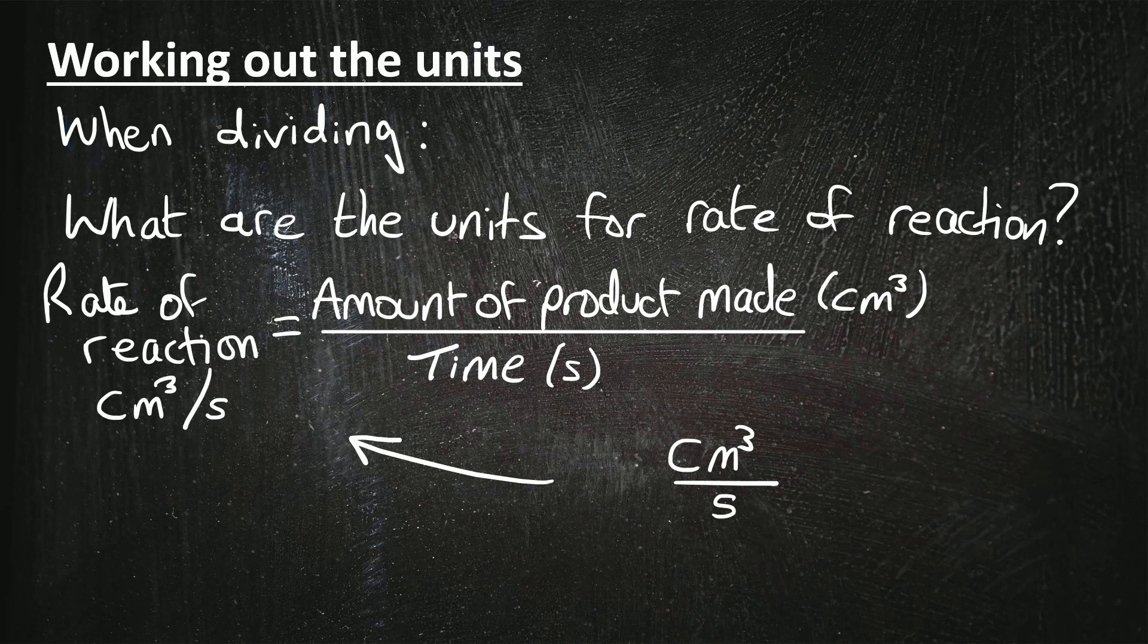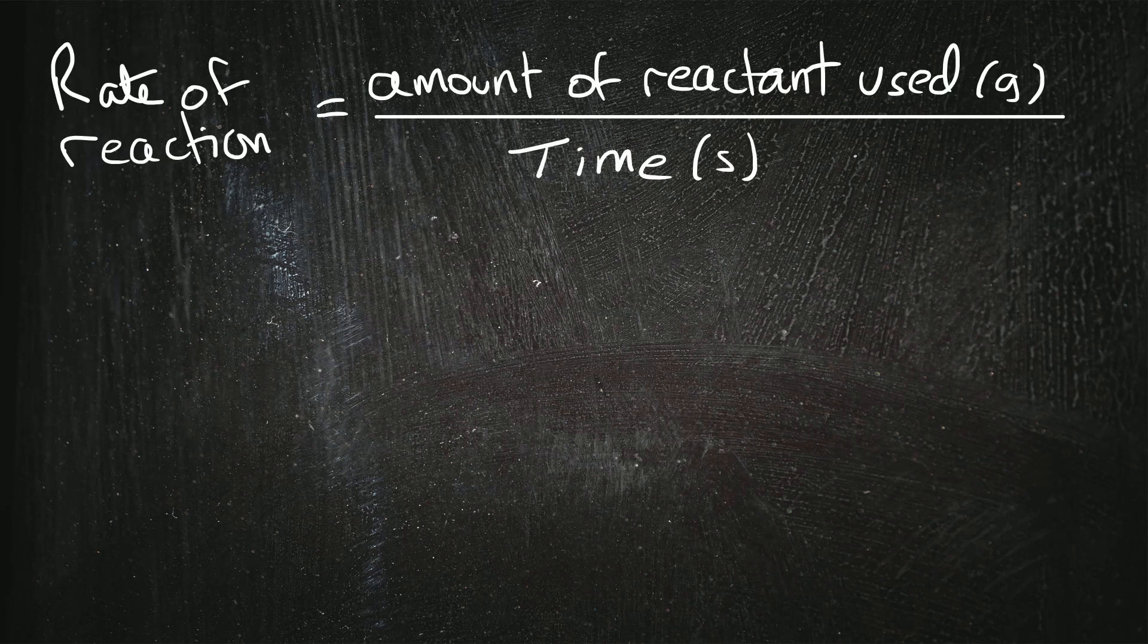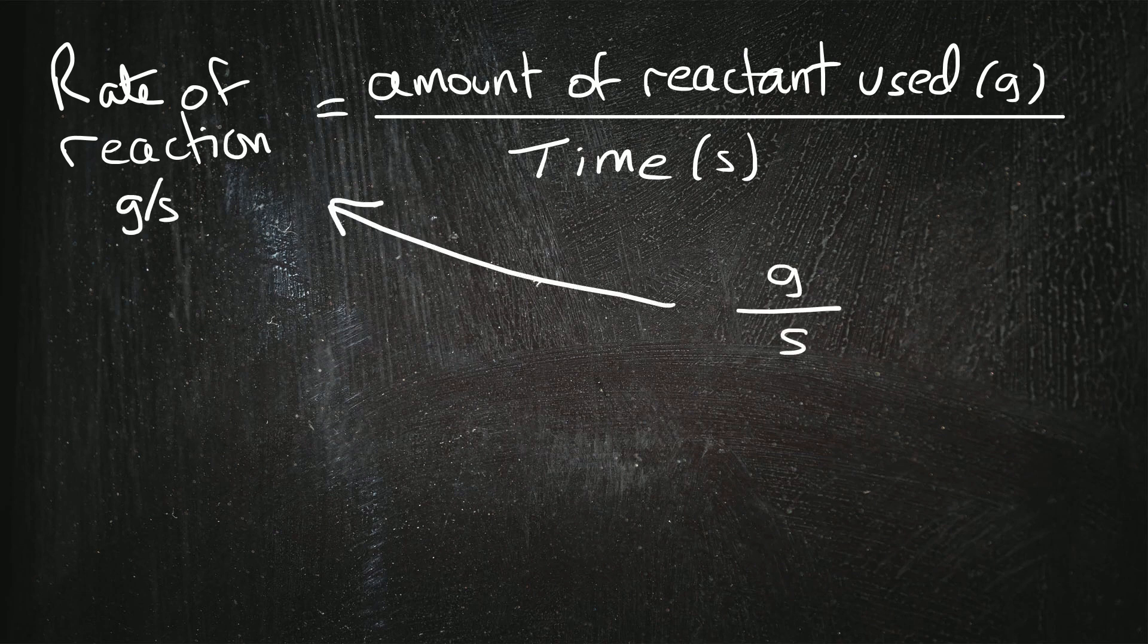Let's look at one more example which involves dividing numbers. So another way of working out the rate of reaction is the amount of reactant used, and that could be in grams, divided by the time which is in seconds. So if we think about the units, we've got grams above seconds, g over s, so that becomes g slash s, grams per second. So once again the dividing line becomes the slash of the units.